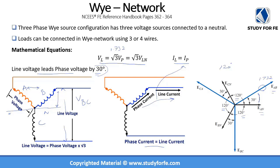So your line-to-line voltage is greater than your line-to-neutral voltage, your line current is the same as the phase current, and your line voltages lead the phase voltages by 30 degrees. There is a mathematical derivation explaining why the line voltage equals 1.732 times the phase voltage and why the line voltage leads the phase voltage by 30 degrees — links will be included at the end of the lecture.